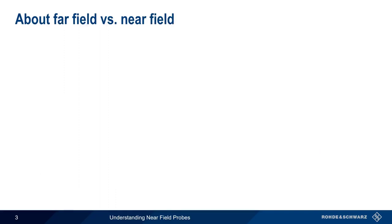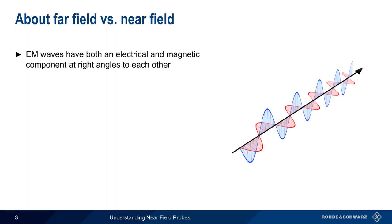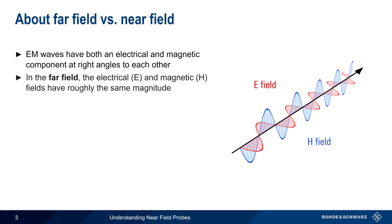At this point, it might be a good idea to pause for a moment and discuss far field and near field. Electromagnetic waves consist of both an electrical and magnetic component that propagate at right angles to each other. In the far field, these two components, normally abbreviated E and H, will have roughly the same magnitude. In the near field, on the other hand, one of these two fields will be dominant.